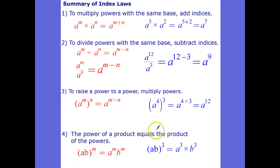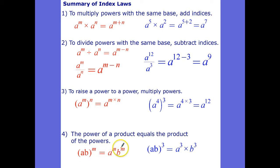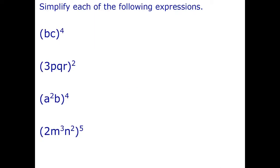And here's the index law. Index law number 4: the power of a product equals the product of the powers. So we're multiplying a to the m times b to the m. There it is in algebra — that's probably easier to understand than the words. And there's a worked example. Let's go ahead and apply index law number 4 to some problems.